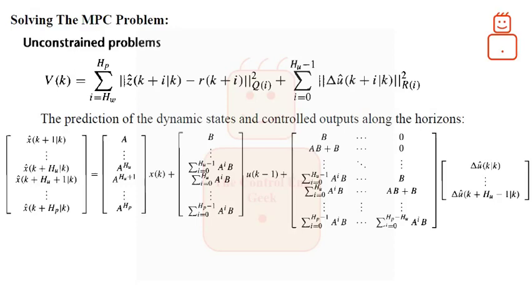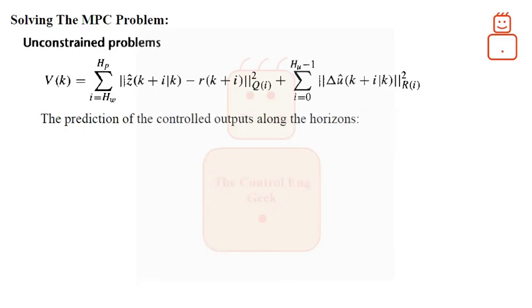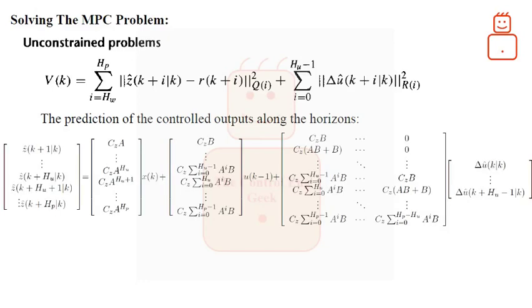While, the future prediction of the controlled output Z hat, can, simply, be found by. Then, we can write the corresponding, future prediction of Z hat as.